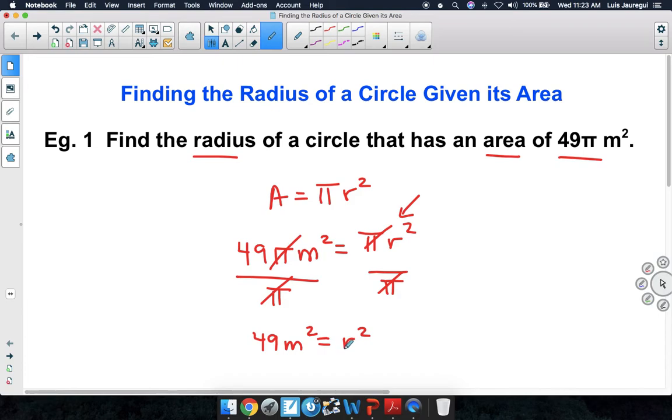Now our goal is to get the r by itself but notice that it's being squared. So we need to undo the square by taking the square root on both sides of the equation.